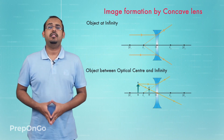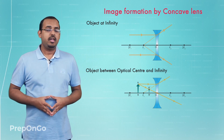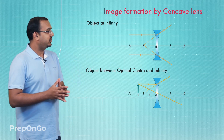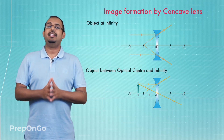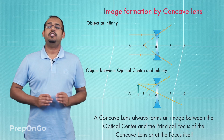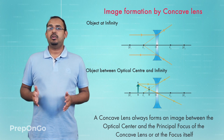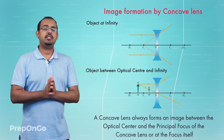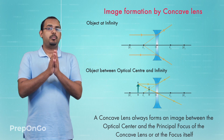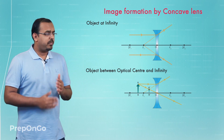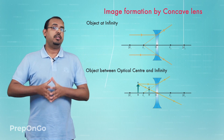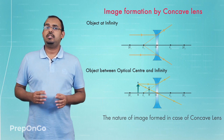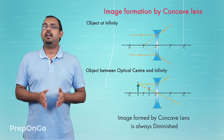These are the only two cases of image formation for a concave lens, as they cover all positions where an object can be placed. The concave lens always forms an image between the optical center and the principal focus, with the focus being the farthest position irrespective of where the object is placed. The image formed is always virtual and erect, and always diminished in size compared to the original object.